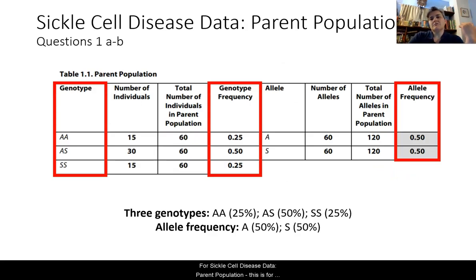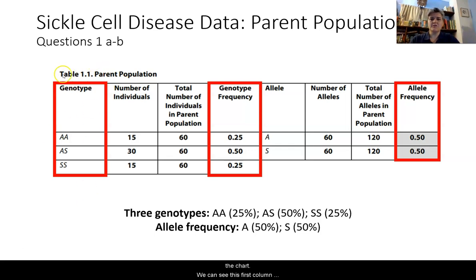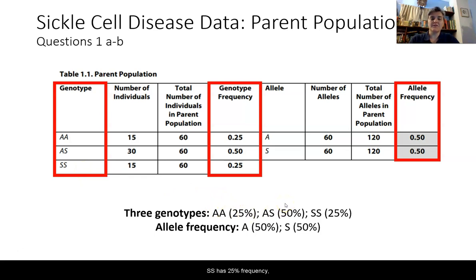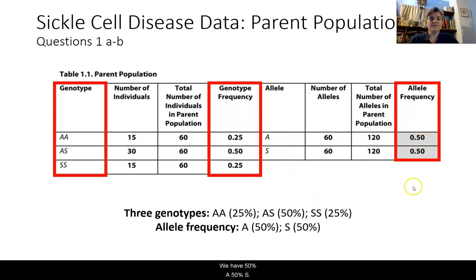For the sickle cell disease data, parent population — questions 1A through B. Looking at the parent population table, the first column is genotype, followed by the number of individuals with that genotype, total population, and frequency or percentage. We also have allele columns for A and S, the number of those alleles, the total parent population, and allele frequency. There are three genotypes: AA at 25% frequency, AS at 50% frequency, and SS at 25% frequency. The allele frequency is 50-50 — 50% A and 50% S.